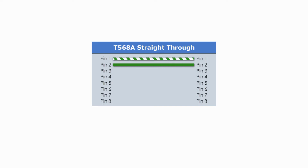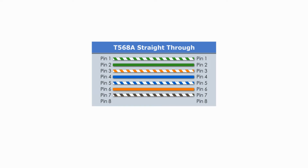A type A straight-through cable has type A RJ45 connectors at both ends. Specifically, pin 1 on one end goes to pin 1 at the other end, pin 2 to pin 2, pin 3 to pin 3, and so on. And that's why it's called straight-through.